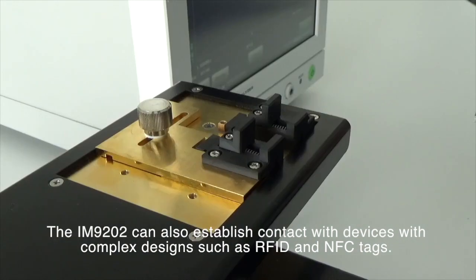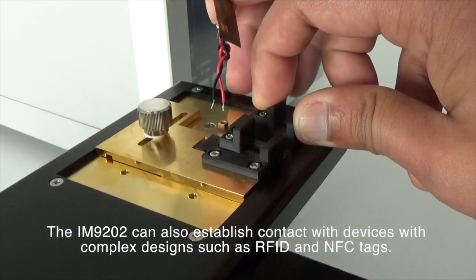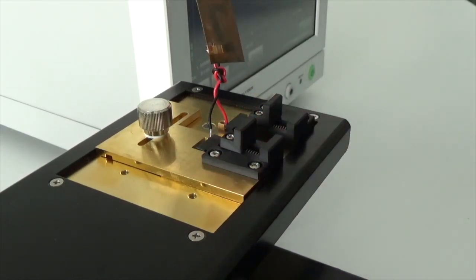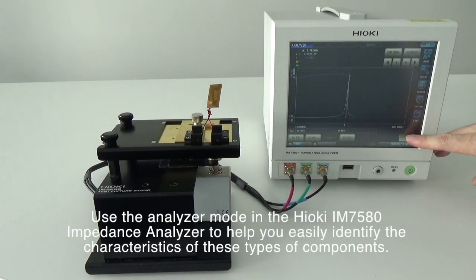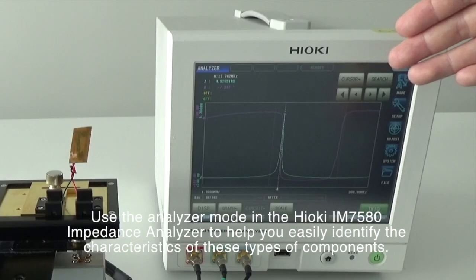The IM9202 can also establish contact with devices with complex designs such as RFID and NFC tags. Use the analyzer mode in the Hioki IM7580 Impedance Analyzer to help you easily identify the characteristics of these types of components.